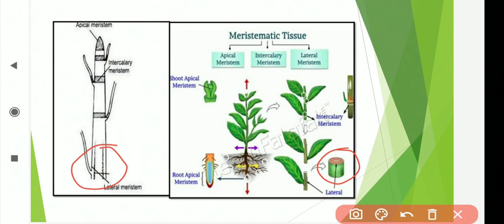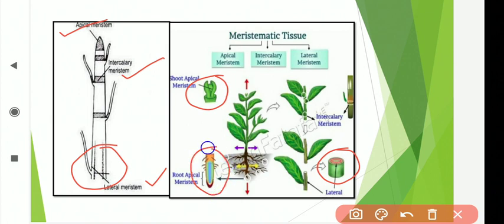The lateral meristem is ultimately responsible for the increase in girth of the plant body. For example, initially a banyan tree stem is very small, but as time goes the lateral meristem becomes active and adds new cells so the girth of the banyan tree increases day by day. Examples of lateral meristem are vascular cambium and cork cambium. We can see apical meristem at the apices of root and shoot, intercalary meristem from where new branches arise, and lateral meristem present in vascular bundles.